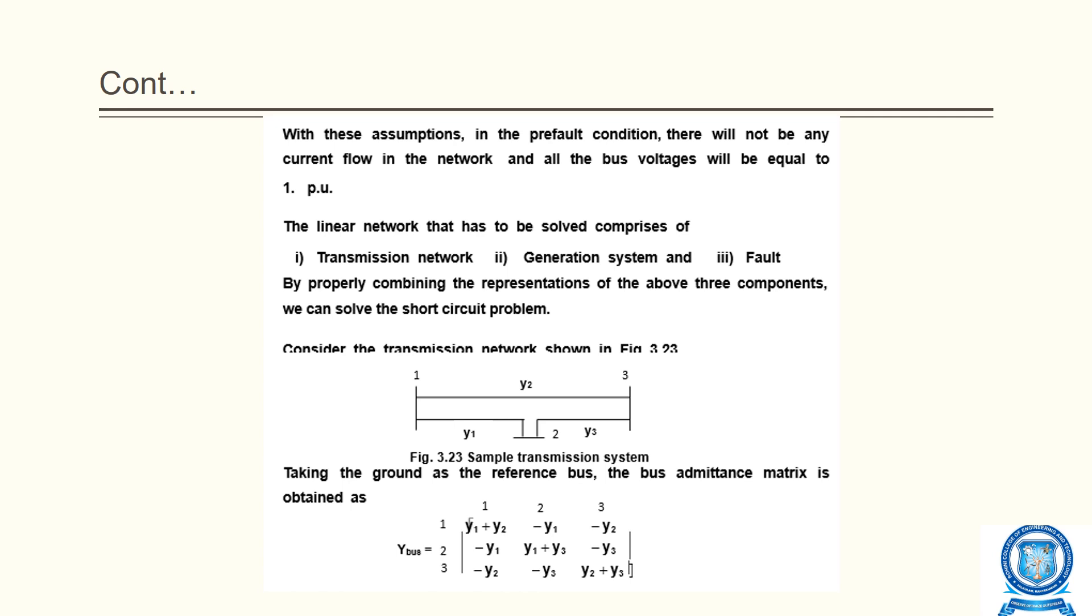Consider a transmission network shown in the figure consisting of three buses: bus 1, bus 2, and bus 3. The admittances between bus 1-2, bus 1-3, and bus 2-3 are Y1, Y2, and Y3 respectively. Taking ground as reference, the Y-bus matrix has diagonal elements (Y1+Y2), (Y1+Y3), (Y2+Y3), and off-diagonal elements -Y1, -Y2, -Y3. The off-diagonal elements are symmetric.